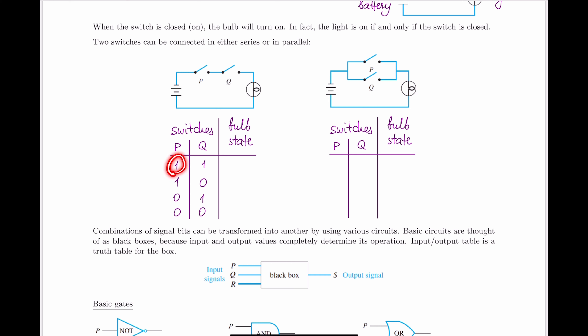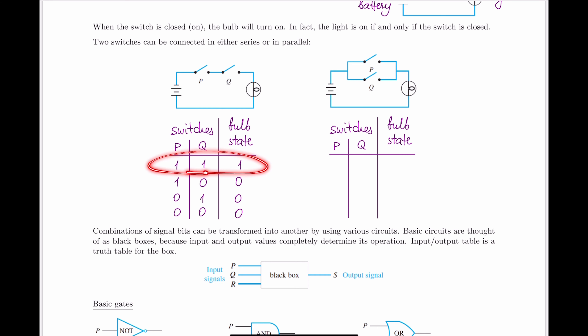For series switches: if both switches are closed, the current makes it all the way through to the bulb and the bulb is turned on. If the switch for P is closed but Q is open, the current made it through P but can't proceed past Q, so the bulb is off. The same logic applies to the other two cases — as long as one switch is open, the current won't make it through. The only way the bulb turns on is if both switches are closed.